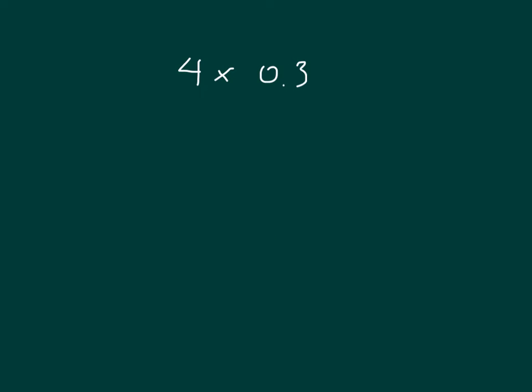Here I have 4 times 3 tenths. Much the same way, we'll have our place value chart. And let's make 4 copies of 3 tenths. There's a 3 tenths, 3 tenths again, 3 tenths again, and another 3 tenths.